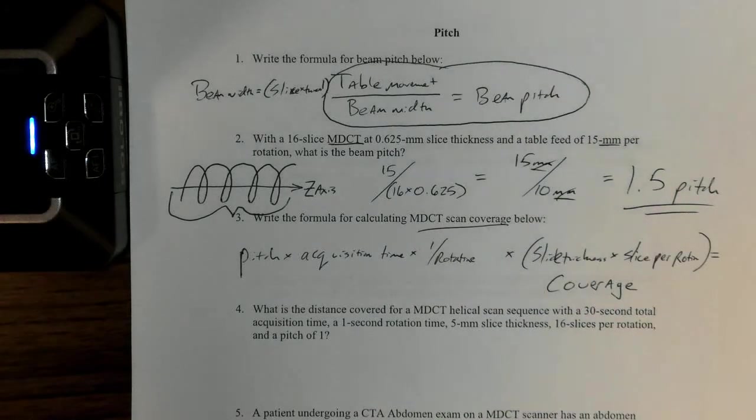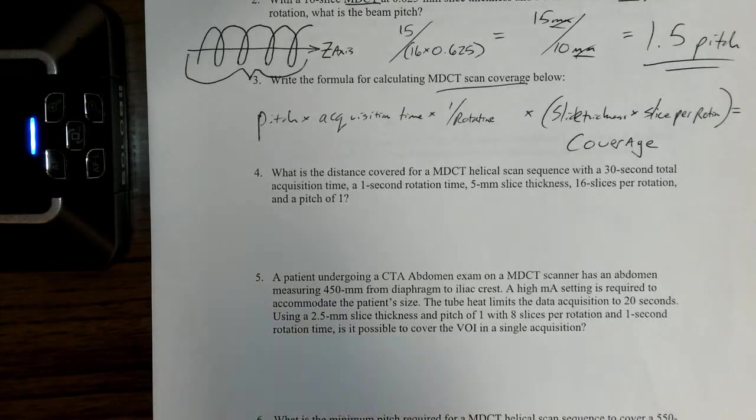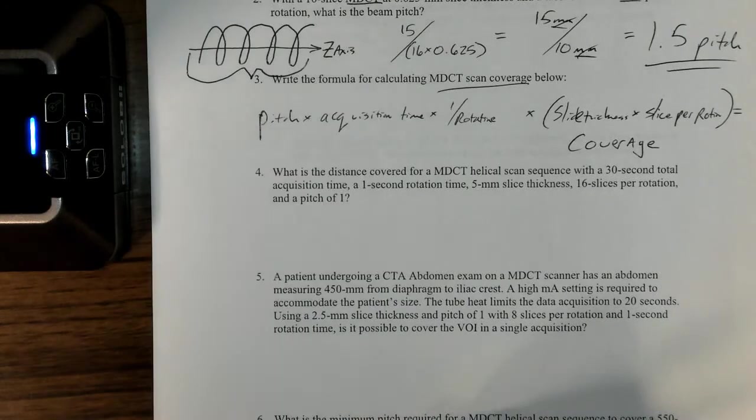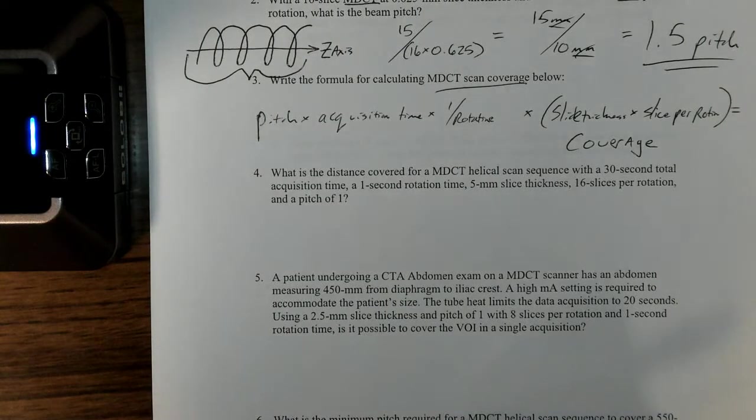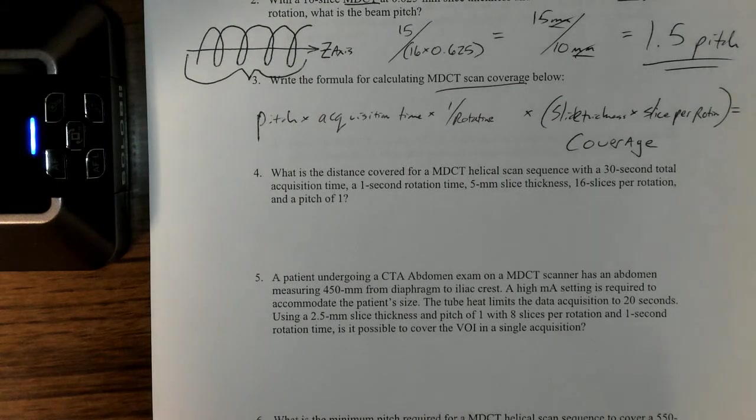That's going to give us the amount of coverage. That's a helpful formula to know because what we're trying to do is figure out how best to image the patient. Different machines are going to be able to cover that amount of distance in different amounts of time.